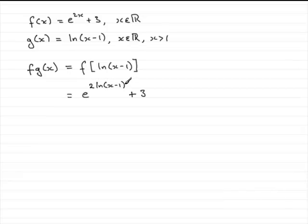Now we can clean this up because we can use the power rule for logs. We can take this 2 up as a power. So we end up with this equaling e to the power log of x minus 1.